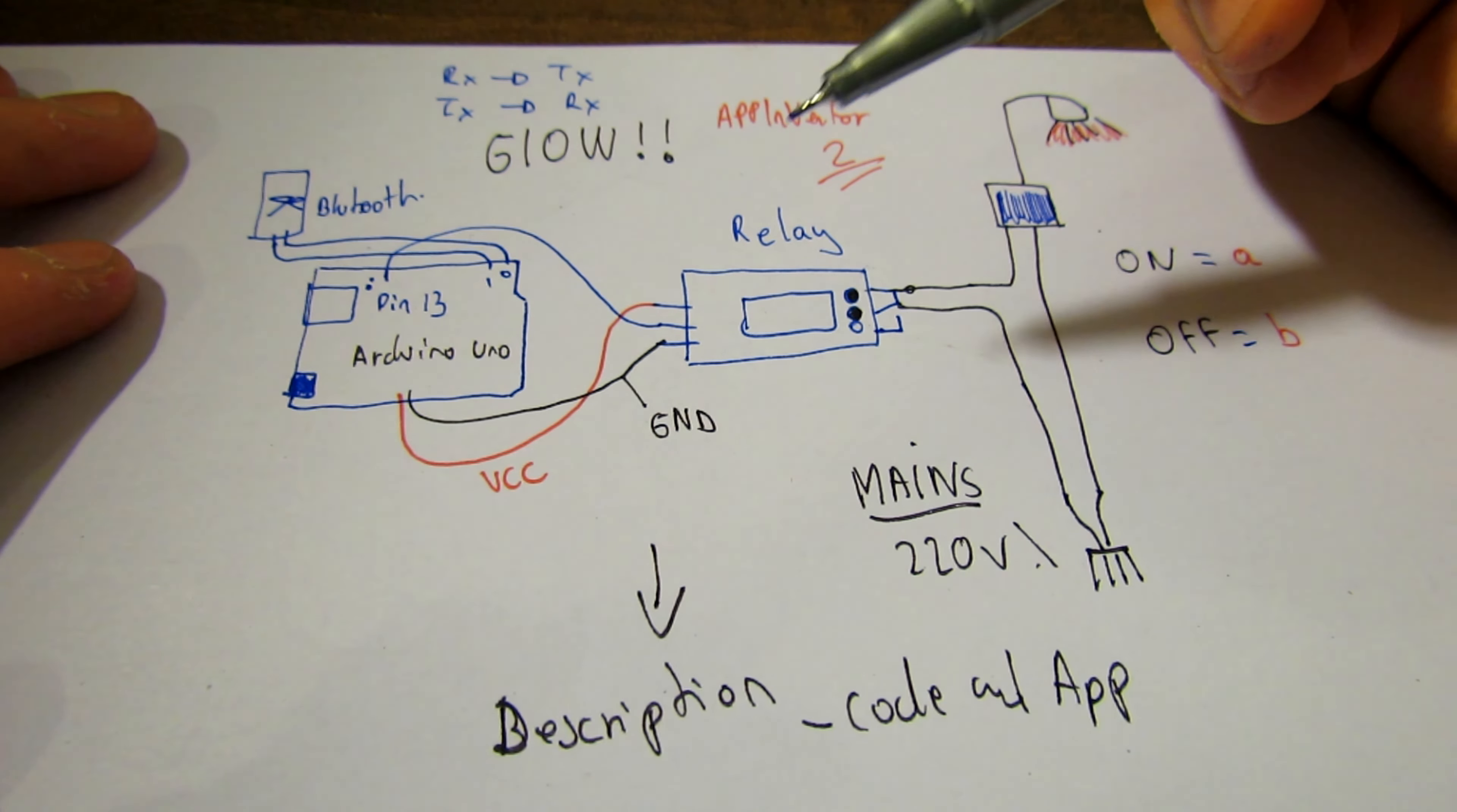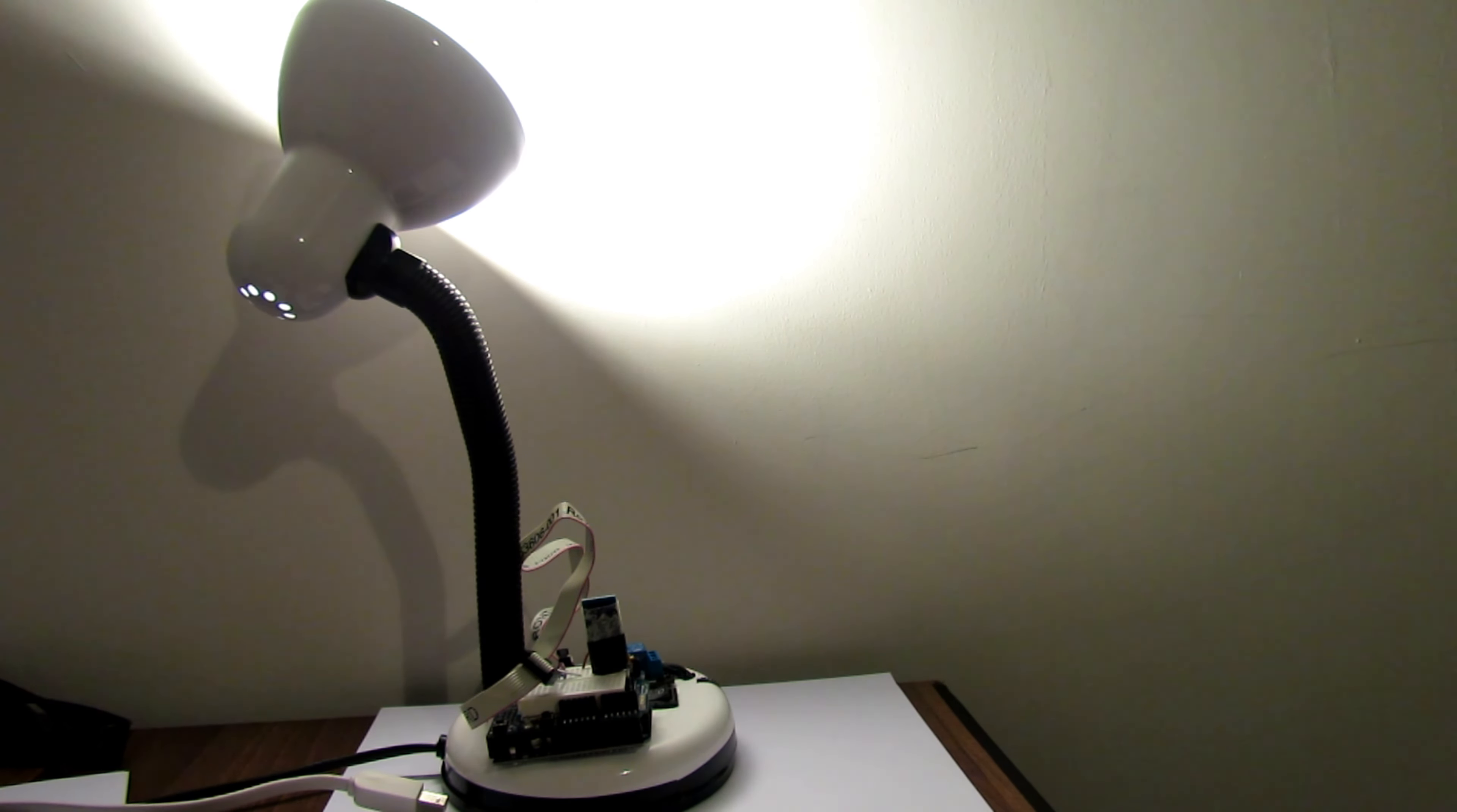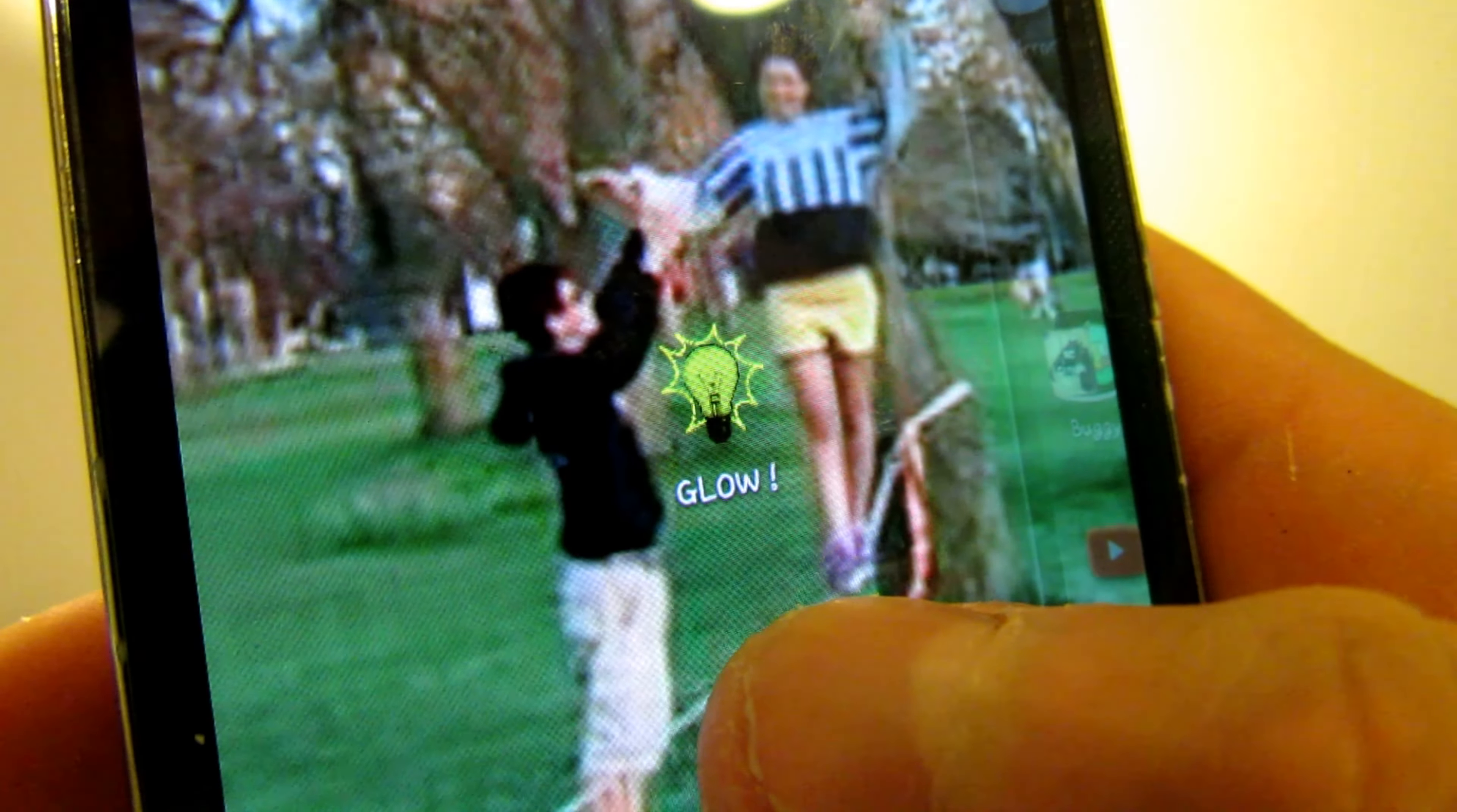Now I'm gonna show you how the actual thing looks like and do a demonstration of how it works. As you can see there is a lamp. Right now the Arduino is not connected yet. I will connect in a minute but now I'm gonna show you how my app looks like. So this is my app. It says Glow as you can see. Now what we're gonna do, we're gonna click on it.